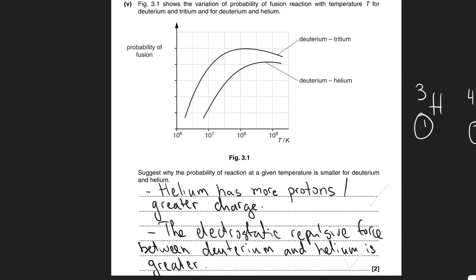Now that you've revised this, your next step is to have a look at part one, which covers the nuclear atom, the strong nuclear force, and beta plus and beta minus decay. Have a look at that revision video to help you revise.